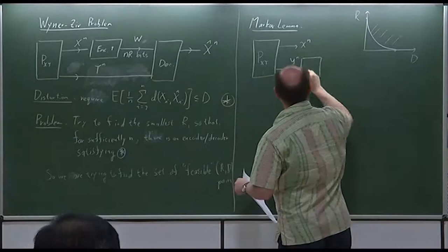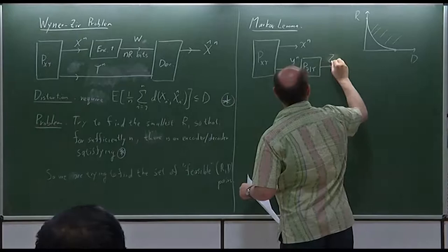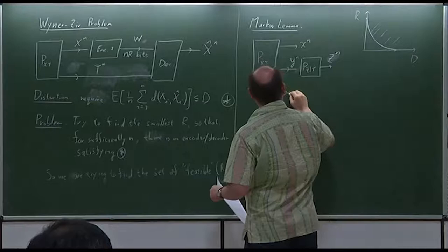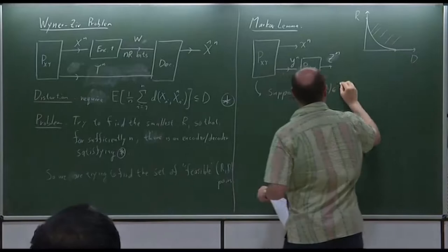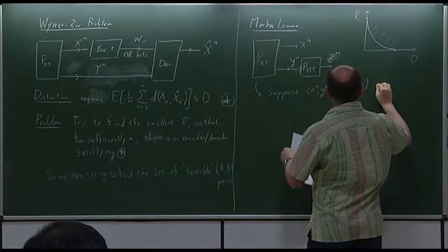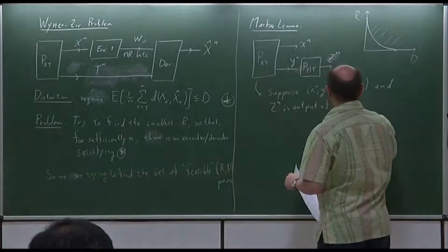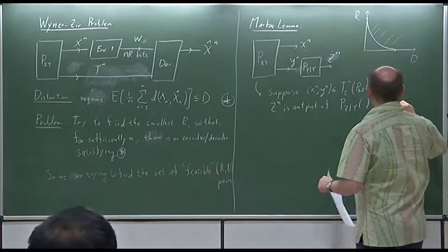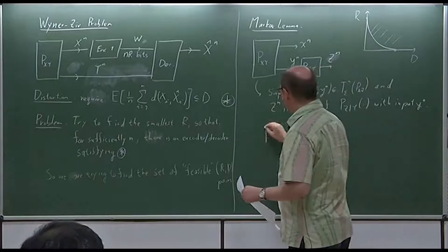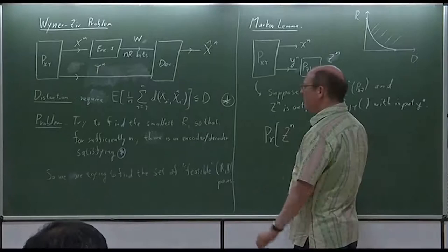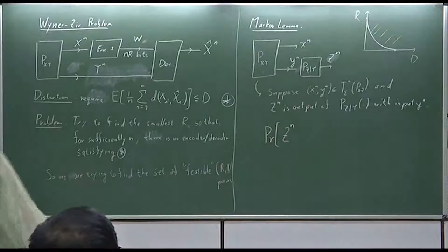So in words: suppose x_n and y_n are jointly typical, and z_n is the output of p_{Z|Y} with input y_n. That's what the picture represents. The claim is that the probability that z_n lands in the conditionally typical set — I have to introduce one more notation: the conditionally typical set. I should have done that before.